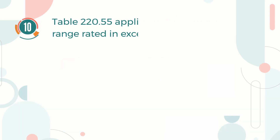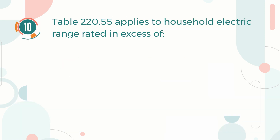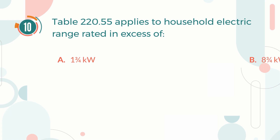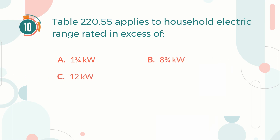Number 10. Table 220.55 applies to household electric ranges rated in excess of: A. 1.75 kW. B. 8.75 kW. C. 12 kW. D. 27 kW.